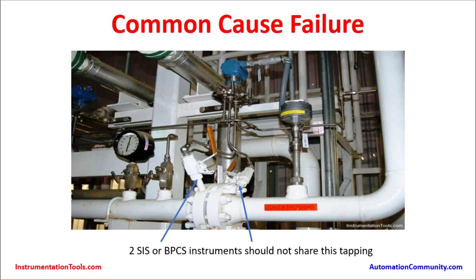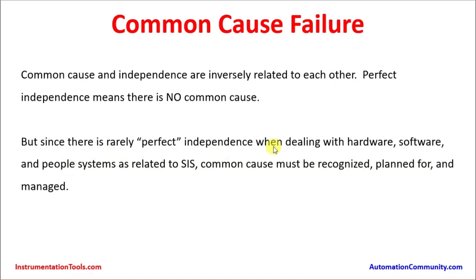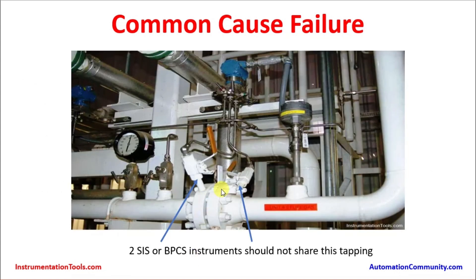If a safety instrumented system calls for providing two instruments on the same process, it is going to be a challenge. Since there is rarely perfect independence when dealing with hardware, software, and people systems related to the safety instrumented system, common cause must be recognized, planned for, and managed. If it is practically very difficult to make separate pipe tapping for different instruments, we must follow the best engineering practice. The engineering should either use only one instrument with the orifice flow tapping, and another instrument of a different technology — such as a mass flow meter or vortex meter.